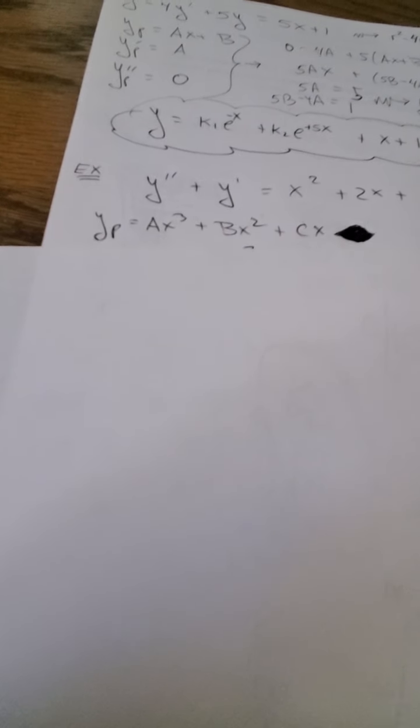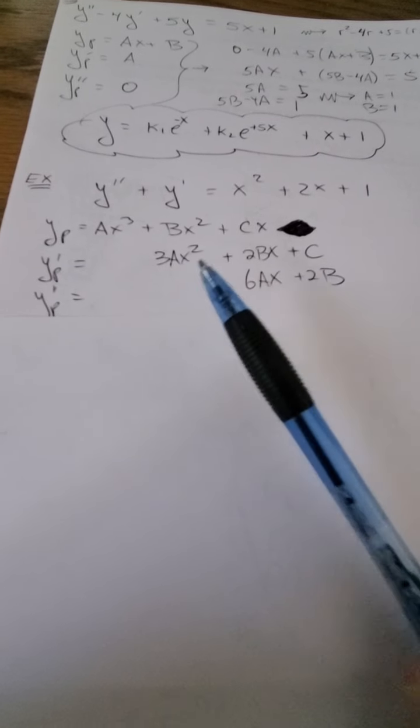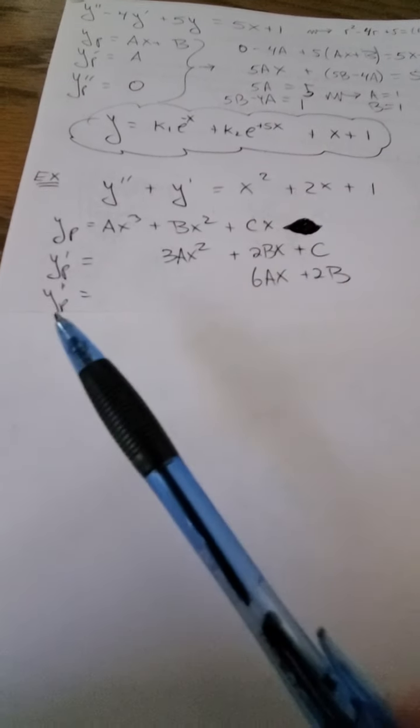So, yp is going to be ax cubed plus bx squared plus cx, and yp prime, of course, is 3ax squared plus 2b plus c, and yp double prime, I'll make that clear, yp double prime, of course, is going to be 6ax plus b.